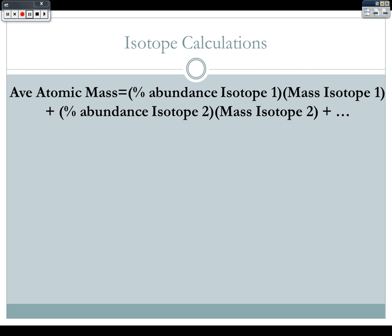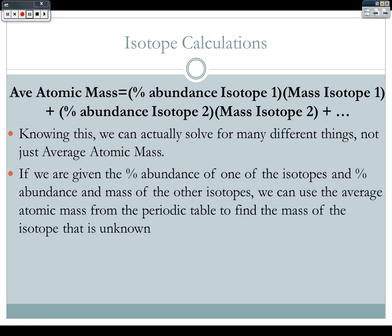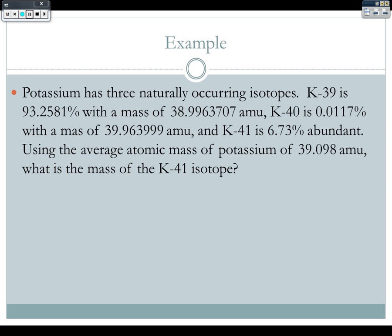Knowing this equation, we can solve for different things — not just the average atomic mass. If you're given the percent abundance of one isotope and the mass and percent abundance of the others, you can use the average atomic mass from the periodic table to find the unknown mass. For example, potassium has three naturally occurring isotopes. Potassium-39 is 93.2581% abundant with a mass of 38.9963707 AMU. Potassium-40 is 0.0117% abundant with a mass of 39.963999 AMU. Potassium-41 is 6.73% abundant. Using the average atomic mass of potassium, 39.098 AMU, what is the mass of potassium-41?